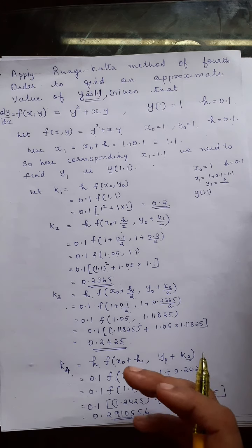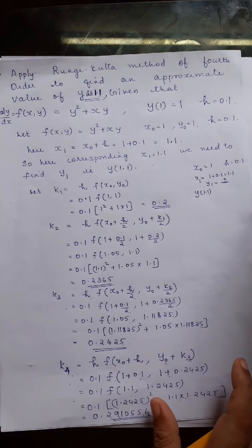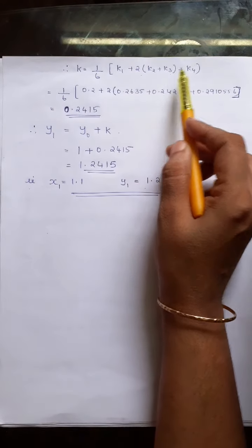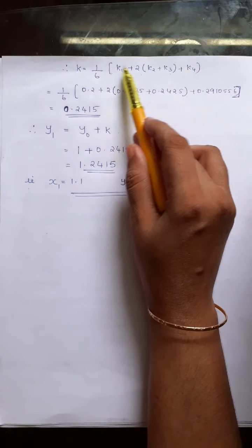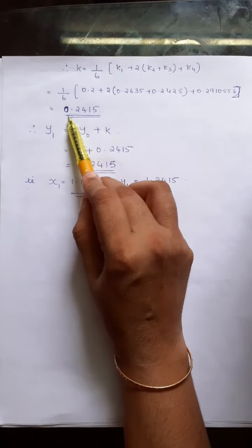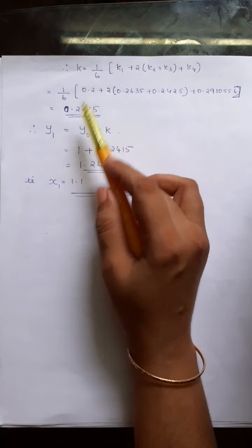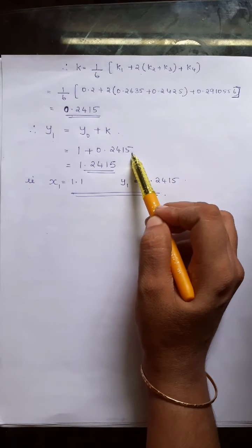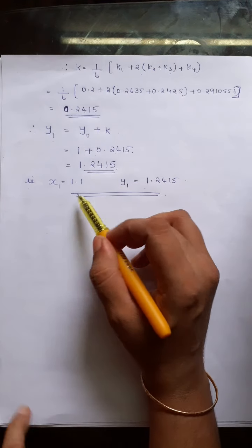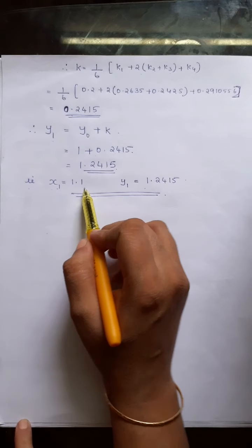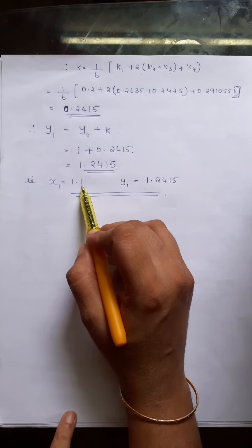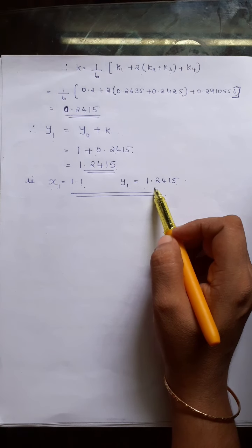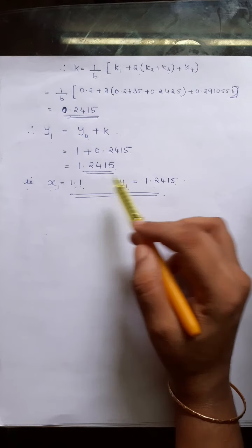With k1 = 0.2, k2 = 0.2365, k3 = 0.2425, k4 = 0.2910056, we compute k = (1/6)(k1 + 2k2 + 2k3 + k4) = 0.2415. Therefore y1 = y0 + k = 1 + 0.2415 = 1.2415. Since x1 = 1.1, the value of y at x = 1.1 is 1.2415. Thank you.